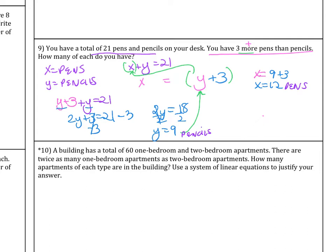So another way to double check whether or not you substituted or added in the right spot here, let's double check. Do I have three more pens than pencils? I have 12 pens versus nine pencils, and I do have three more, so that is correct. So if I write my sentence, I can say you have 12 pens and nine pencils on your desk.